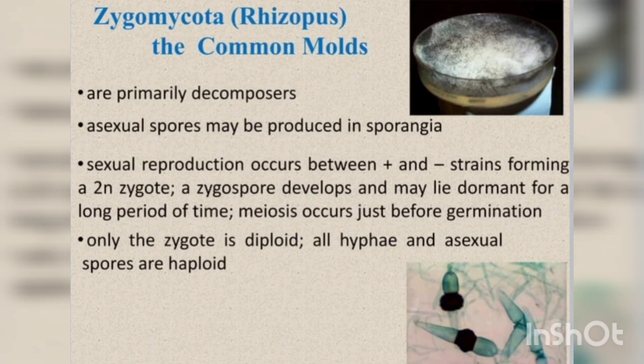They are primarily decomposers. Their asexual spores are produced in sporangia, and sexual reproduction is by gametangial fusion between positive and negative strains, producing the zygospore. The zygospore may undergo a period of rest, and meiosis occurs just before germination. The zygote formed is diploid, while all hyphae and asexual spores are haploid. The vegetative body of Rhizopus is a haploid eucarpic mycelium.